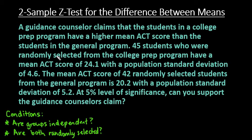For this video, I want to show you how to run a two-sample z-test for the difference between means, and I'm going to use a rejection region to help us make our decision as to whether we want to reject or fail to reject.